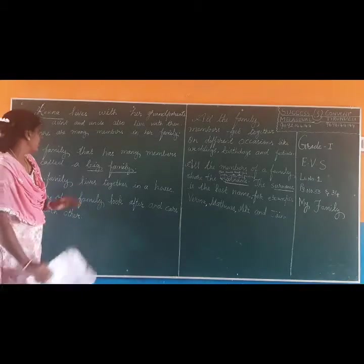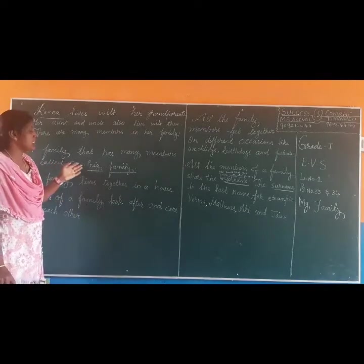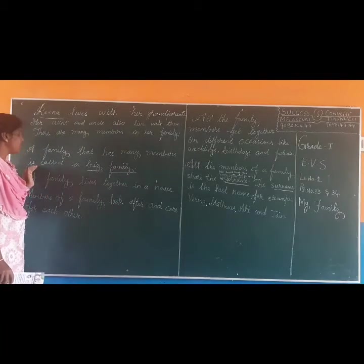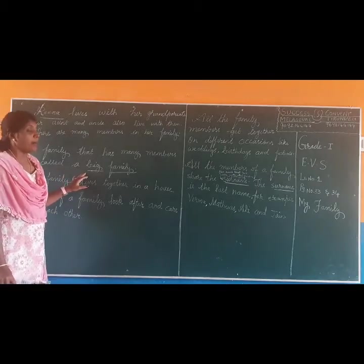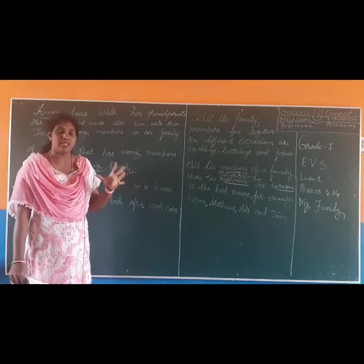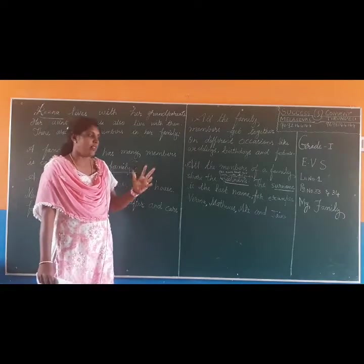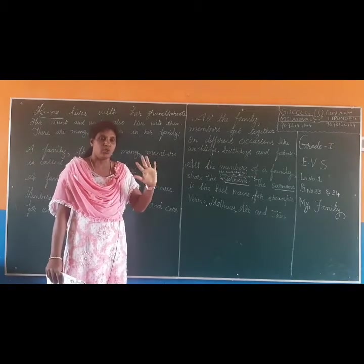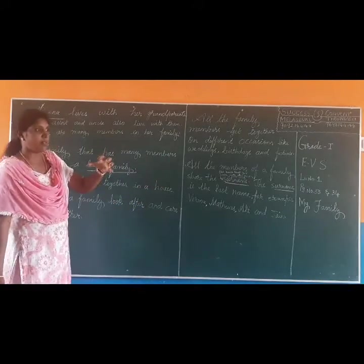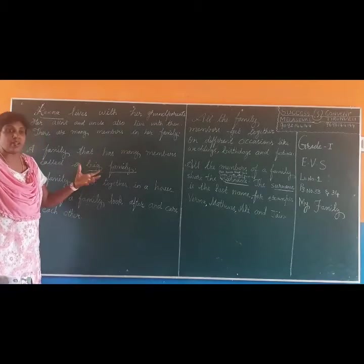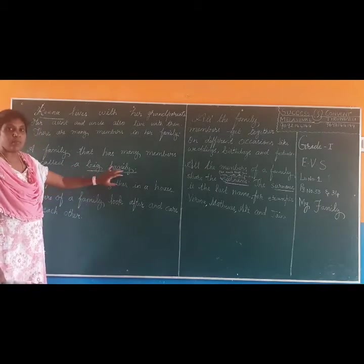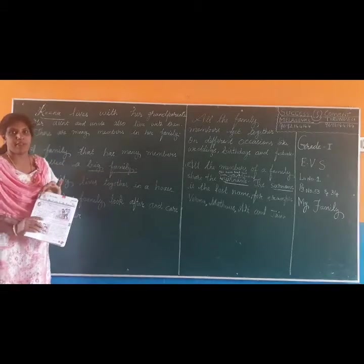You can see the picture. A family that has many members is called a big family. A family with four members — father, mother, and two children — is called a small family. If there are more members like grandparents, grandfather, grandmother, cousin, then it is called a big family. So Rina's family is a big family.